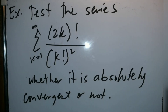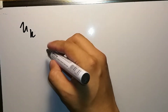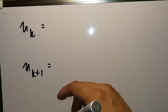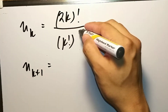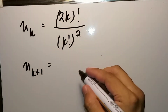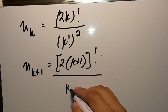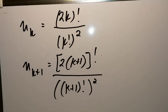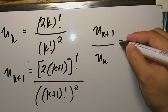For example, test the series summation of (2k)! / (k!)² from k=1 to infinity for absolute convergence. We need u_k and u_{k+1}. We have u_k = (2k)! / (k!)², and u_{k+1} = (2(k+1))! / ((k+1)!)². Getting the ratio u_{k+1}/u_k gives (4k² + 6k + 2) / (k² + 2k + 1).